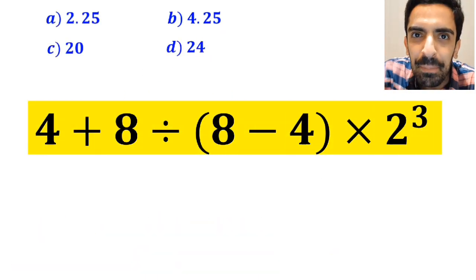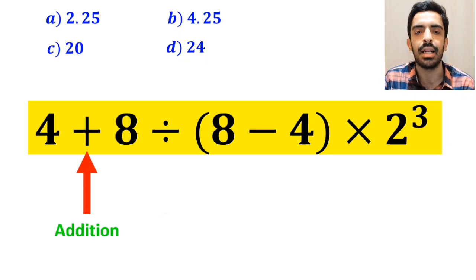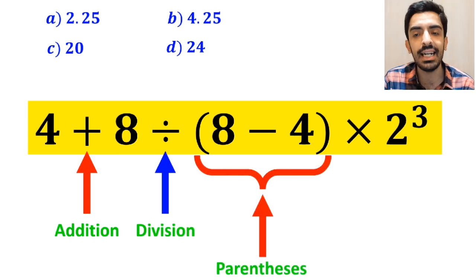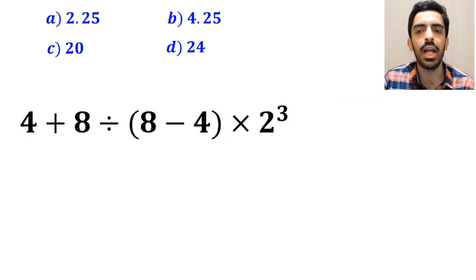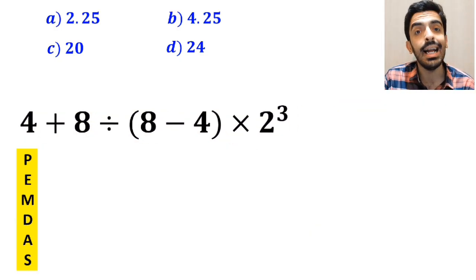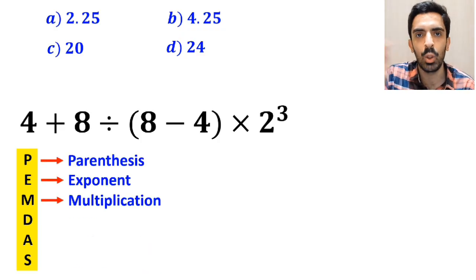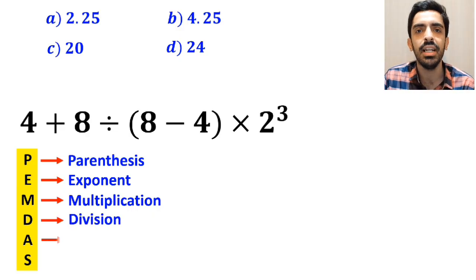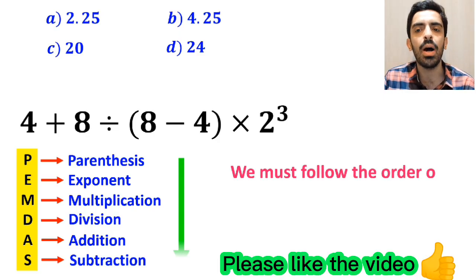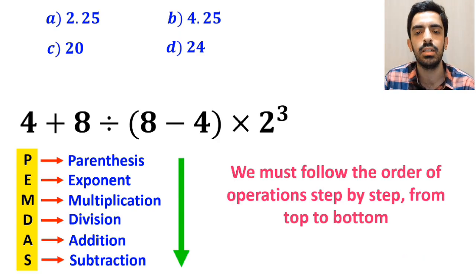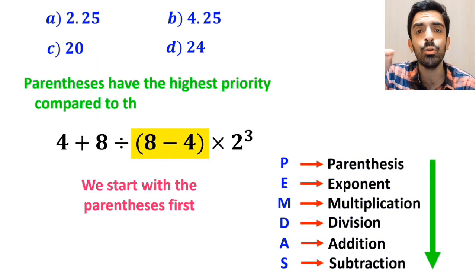Now let me show you how to solve this expression properly. As you can see in the image, this expression contains an addition sign, then a division sign, followed by parenthesis, then a multiplication, and finally an exponent. To solve this problem, we must follow the PEMDAS rule: P stands for parenthesis, E for exponent, M for multiplication, D for division, A for addition, and S for subtraction. We must follow the order of operations step by step from top to bottom.